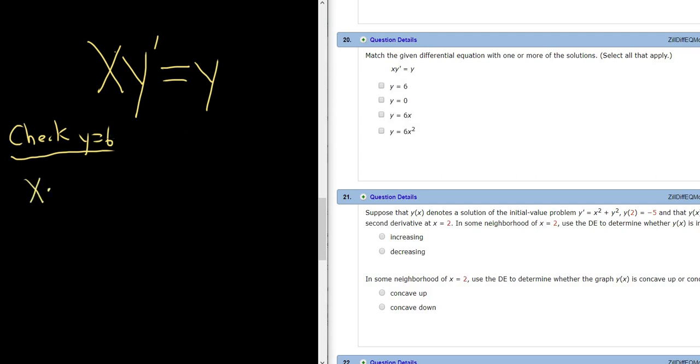We get x times, well y prime is 0 because the derivative of 6 is 0, and that should be equal to y which is 6. Just plugging everything in. No. 0 is not equal to 6.